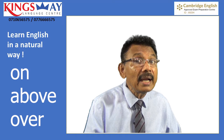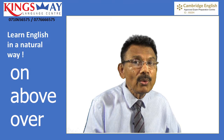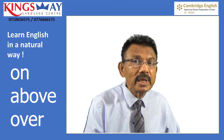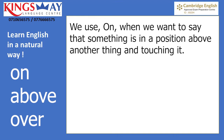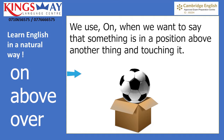I'd like you to watch the video until the end. You will learn the use of on, above, and over when we are talking about positions — when we are talking about places where something or someone is. We use 'on' when we want to say that something is in a position above another thing and touching it.